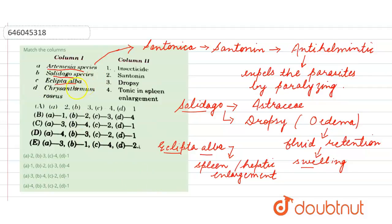Next is Chrysanthemum roseus. Chrysanthemum roseus is an insecticide. So let's see here. First one, A, Artemisia, so it will match with the santonin which is mentioned in column two. In the second one, then B, Solidago species is helpful in the treatment of dropsy.